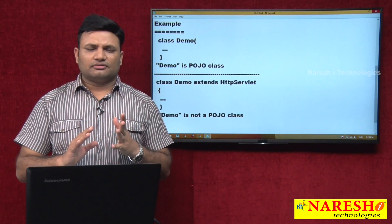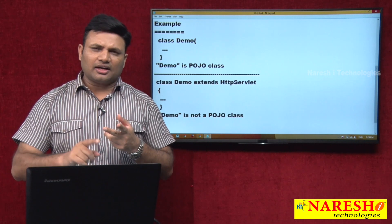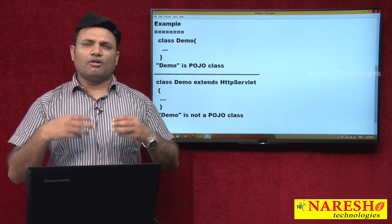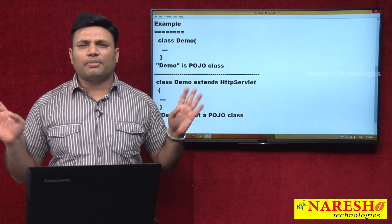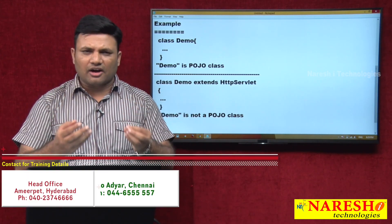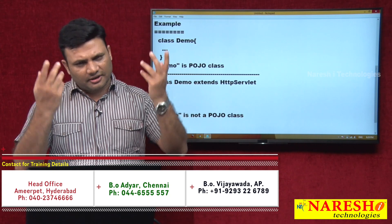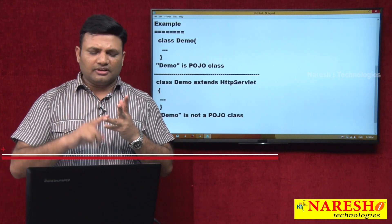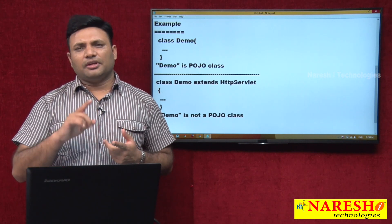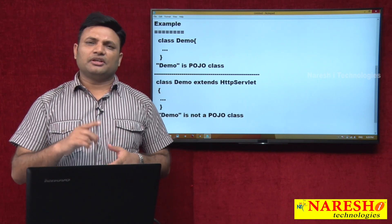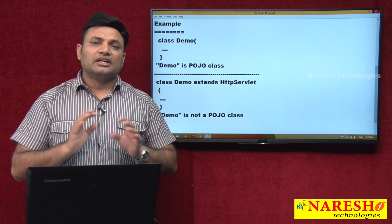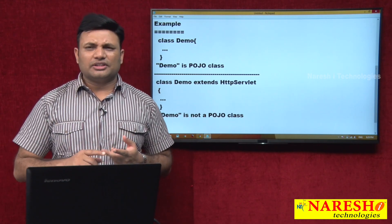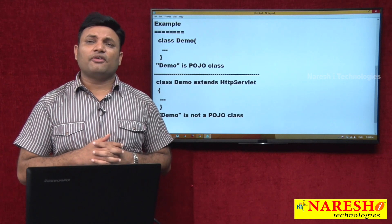Let me clarify the distinction. Java language includes: OOPs, exception handling, collections, multi-threading, AWT, Swing, reflection API — all part of the Java programming language. Whereas JDBC, Servlet, EJB, JSP, JMS — all these are Java technologies or Java frameworks. Since HttpServlet is a class given by the Servlet API, Demo extending it is not a POJO class.